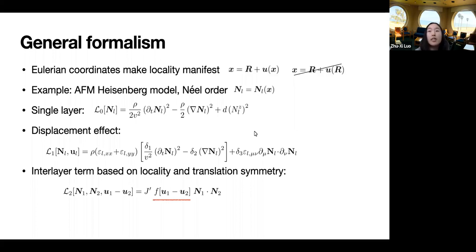Finally, we add the interlayer exchange. Assuming locality and translational symmetry, it has the following form. So locality is manifest in the sense that we have n1 of x dot n2 of x, and it depends only on u1 minus u2, because translating two layers by a same vector will not affect the physics. Here, also due to translation in a single layer, this f can be expanded in Fourier series and approximated by a small number of harmonics. And we have also ignored the corrections proportional to the displacement gradients, because both j prime and displacement gradients are supposed to be small. The total Lagrangian is then the summation of these three terms.